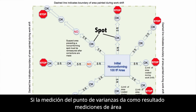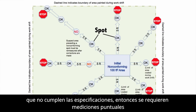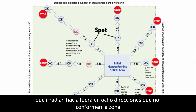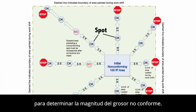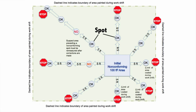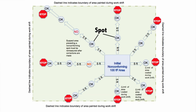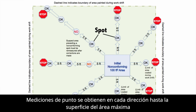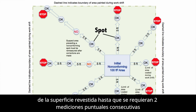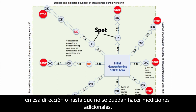If spot measurement variances result in area measurements that do not meet the specification, then additional spot measurements are required radiating outward in eight directions from the non-conforming area to determine the magnitude of the non-conforming thickness. If there is no place to measure in a given direction, then no measurement in that direction is necessary. Spot measurements are obtained in each direction up to the maximum surface area coated during the work shift until two consecutive conforming spot measurements are obtained in that direction or until no additional measurements can be made.